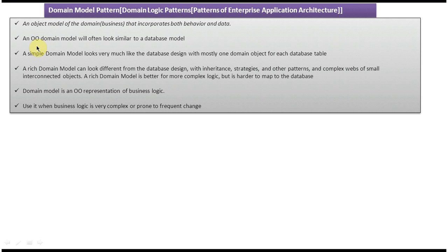Usually the simple domain model will look like the database model. Suppose in the database there are five tables — then your domain model will have five classes to represent each table, with mostly one domain object for each database table.